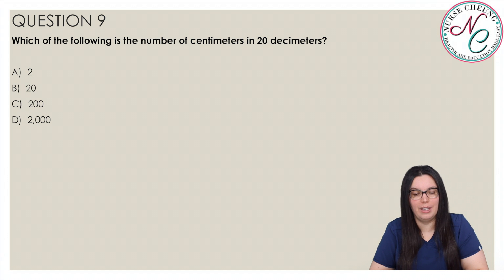Which of the following is the number of centimeters in 20 decimeters? Is it A, 2, B, 20, C, 200, or D, 2000? And the correct answer is C, 200. Convert decimeters to centimeters. 1 decimeter is equal to 10 centimeters. We multiply that. 20 times 10 is equal to 200. Therefore, 200 centimeters are in 20 decimeters.